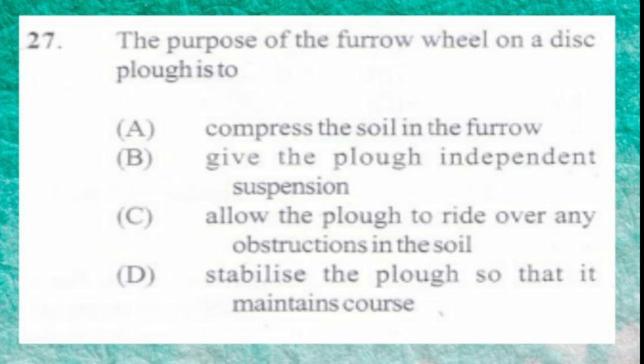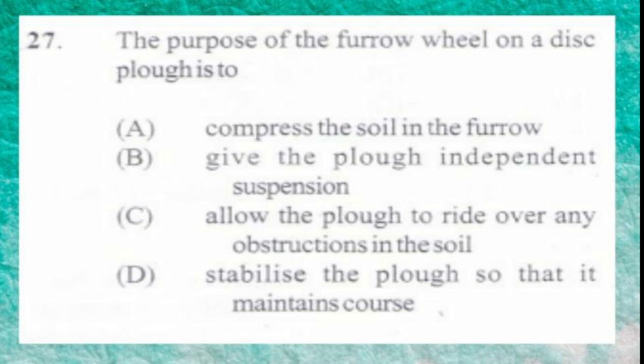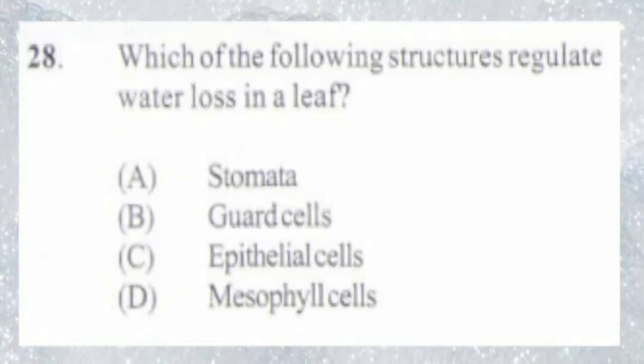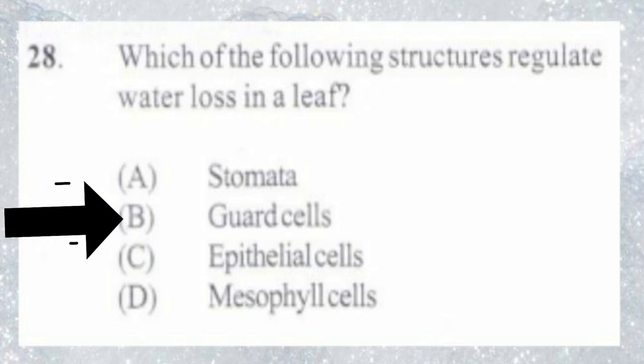Question number 27. The purpose of the furrow wheel on a disc plow is to: A. Compress the soil in the furrow, B. Give the plow independent suspension, C. Allow the plow to ride over obstructions in the soil, D. Stabilize the plow so that it maintains course. The answer is D, stabilize the plow so that it maintains course. Question number 28. Which of the following structures regulate water loss in a leaf? A. Stomata, B. Guard cells, C. Epithelial cells, D. Mesophyll cells. The answer is B, guard cells.